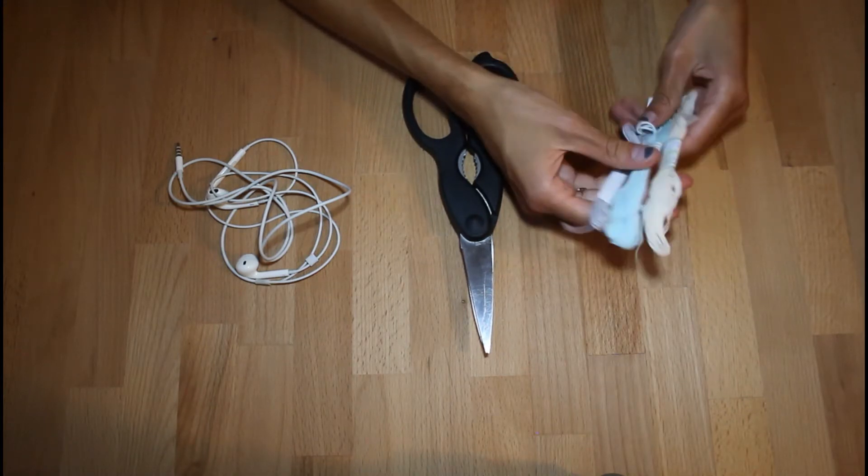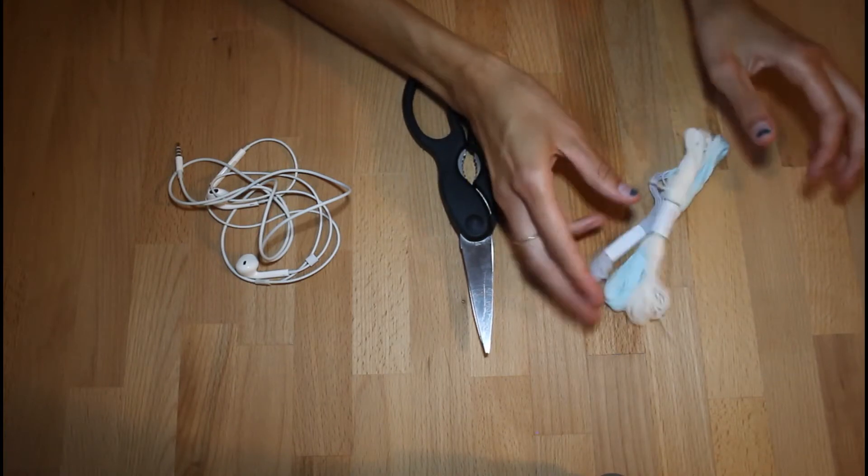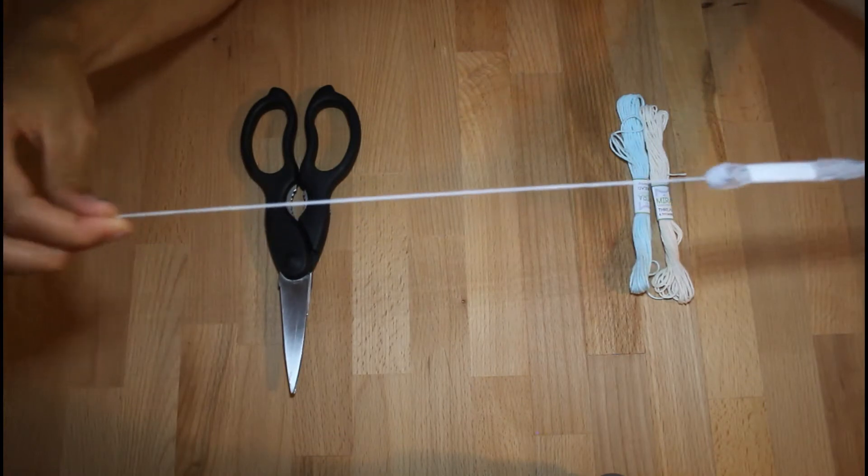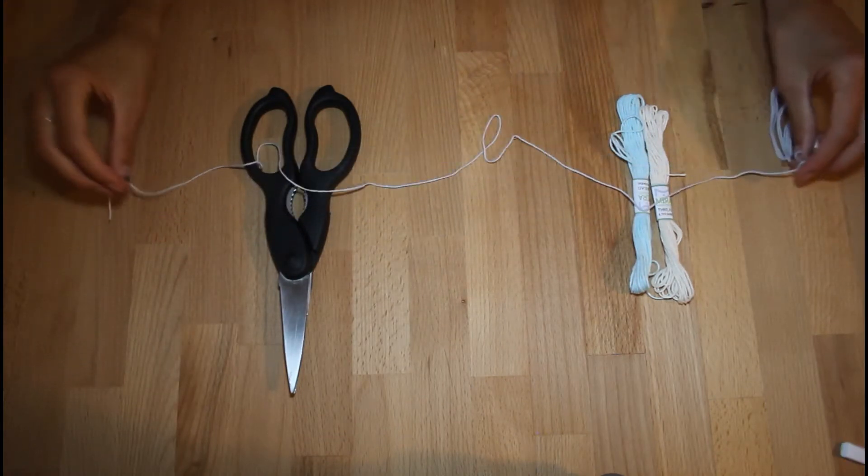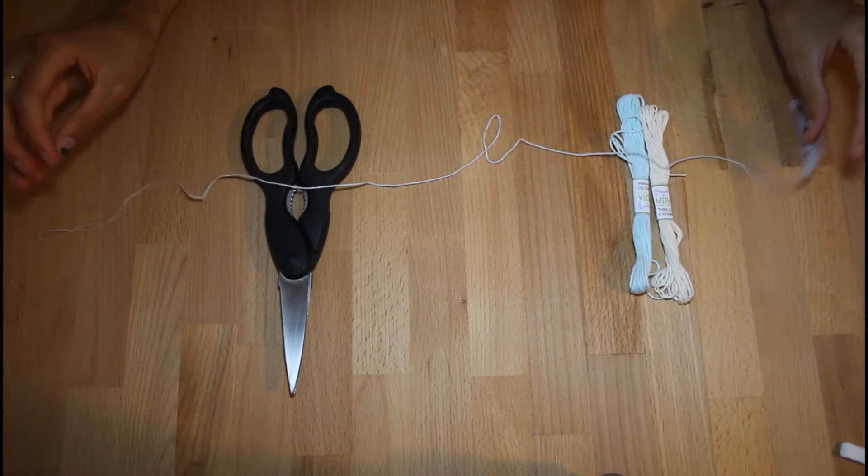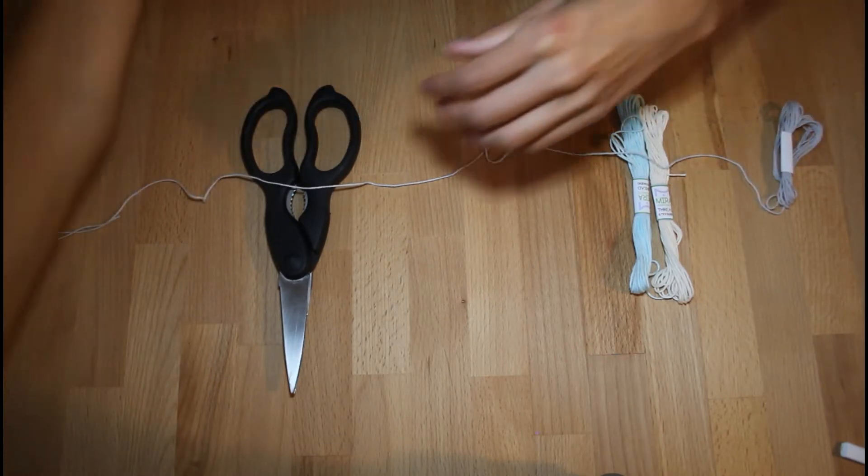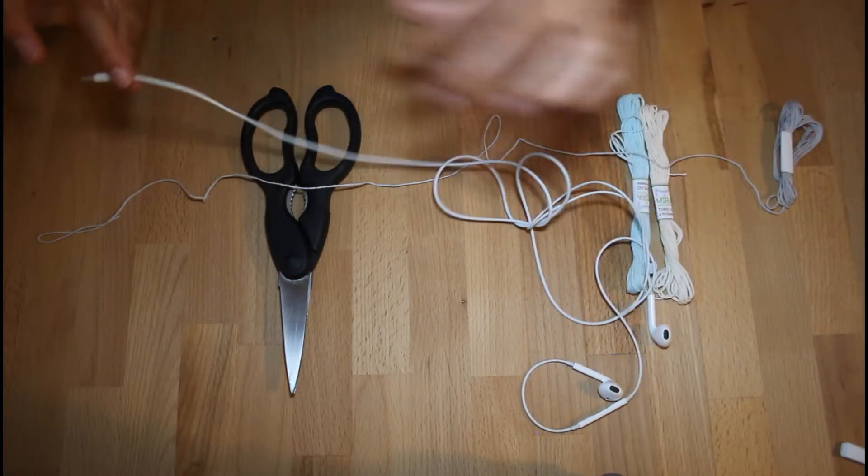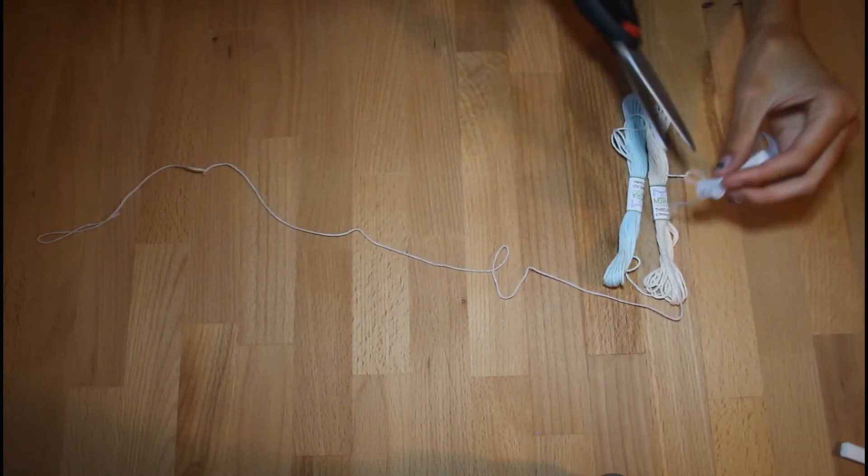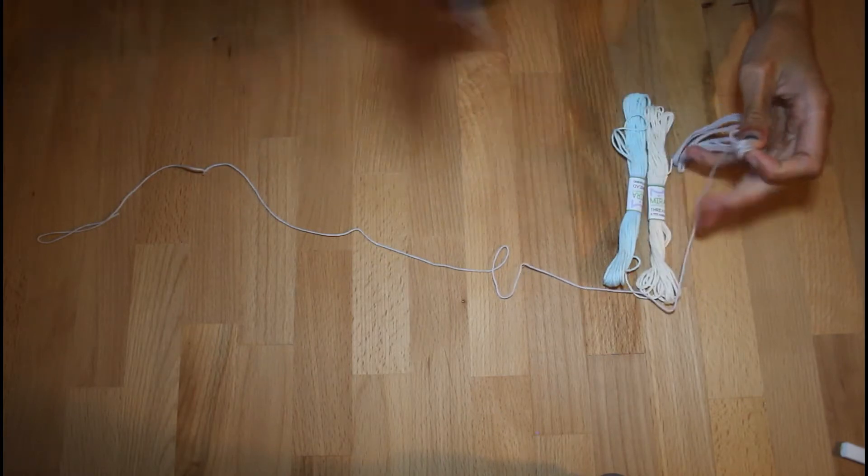You're going to start off by pulling out some string of one of your colors. A way to gauge how much string you want, just to be safe, do twice the length you want it to go down the cord. So if I want to wrap this much of my cord, my string would be double that length. Then you're just going to snip it where you want.